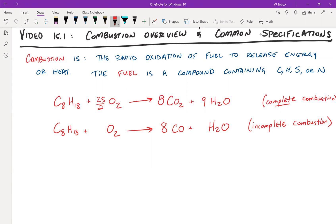So 8 COs and 9 H2Os. And 8 and 9 is 17, so 17 over 2 O2s. When you have complete and incomplete combustion occurring, you must also write the chemical reactions as occurring separately.